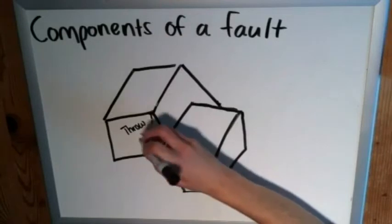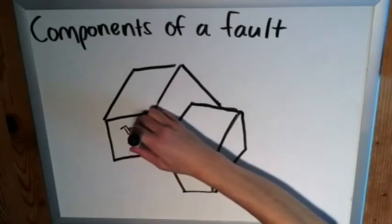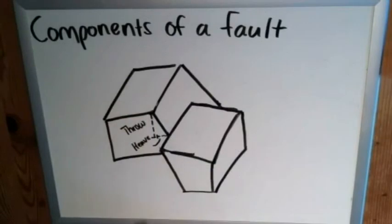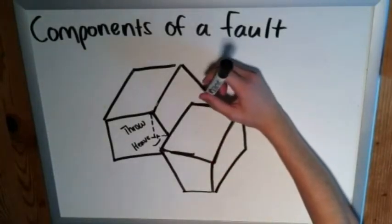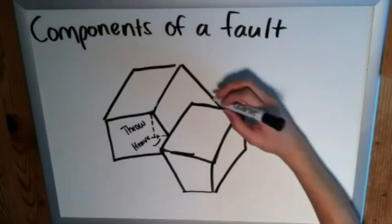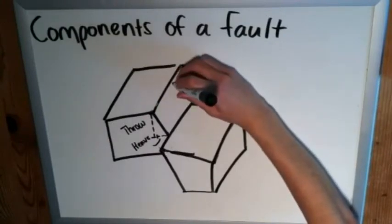Simple enough. And there's two or technically three other components to talk about specific to oblique slip faults. We can actually create names for the ways in which it behaves somewhat like a dip slip and somewhat like a strike slip fault, and those are simply called the dip slip and strike slip components respectively.